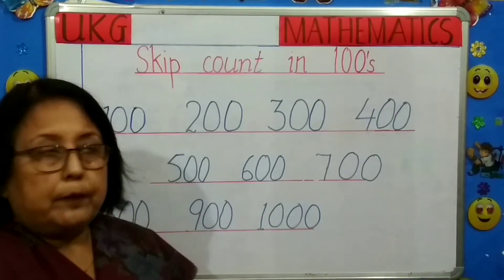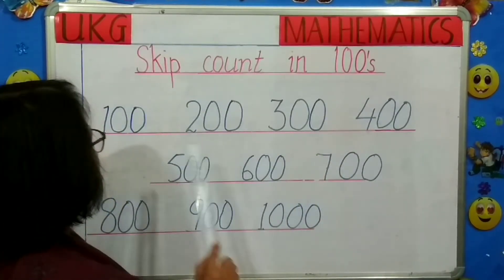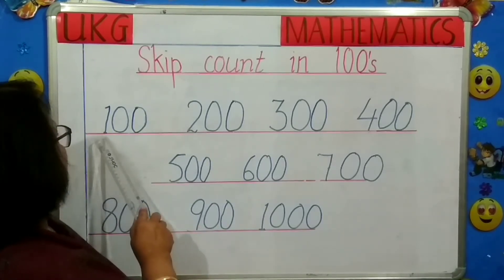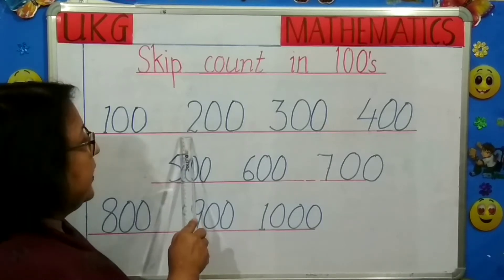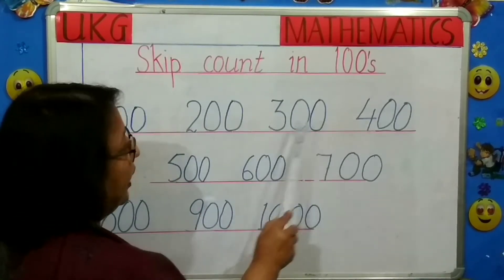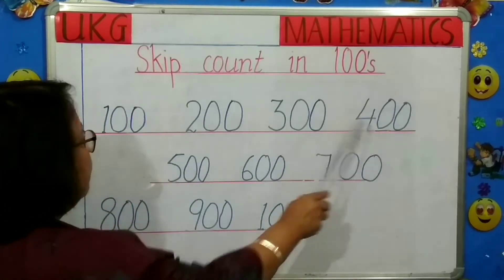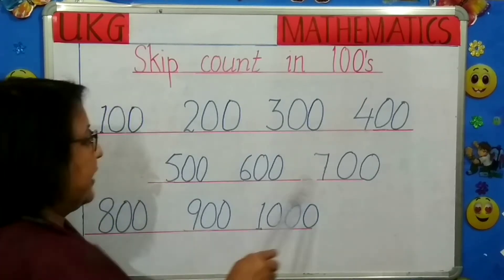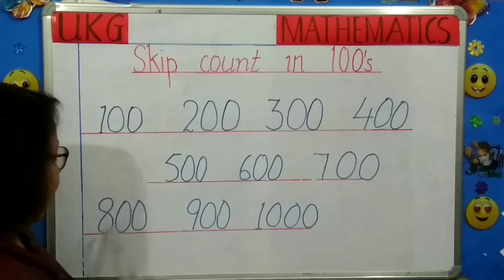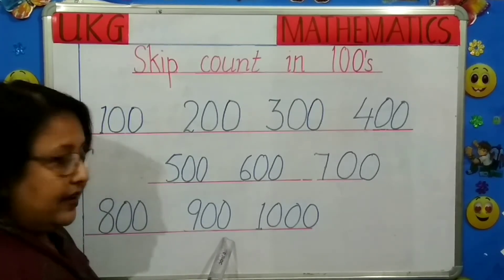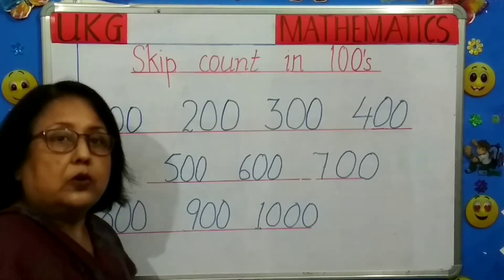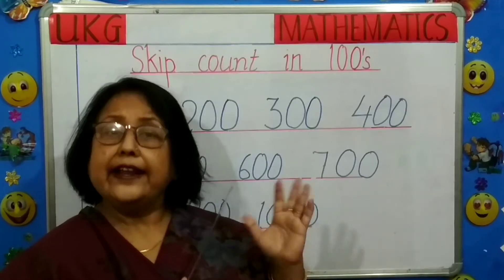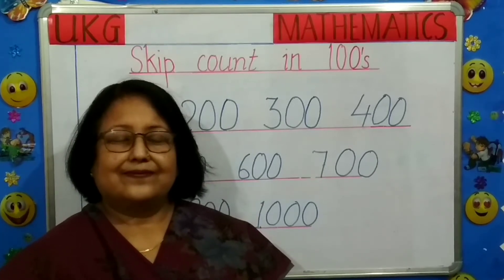So moving on to our next topic. Children, skip count in 100s. You will notice that the first number only changes. The rest will remain the same. So now what do we know? 100. Now this 1 will be changed. It goes to 2, 200. 2 after 2, 3. Then 300. After 3, 4. Then 400. After 4, 5, 500. After 5, 6, 600. After 6, 7, 700. After 7, we go to 8. Then we get 800. Then after 8, 9. Then we go to 900. After 900, so we come to 1000. So children, today I have taught you skip counting 2s, 5s, 10s and 100s. You need to revise it.